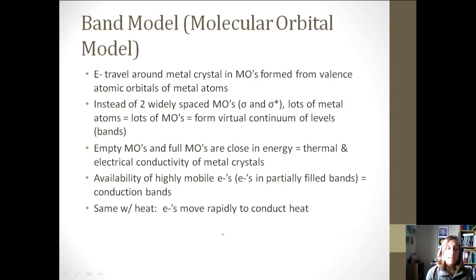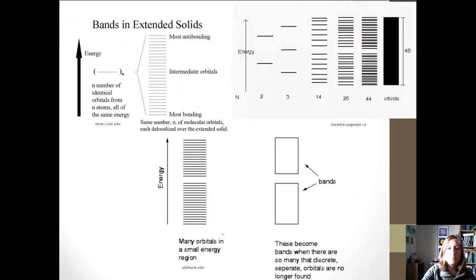So empty molecular orbitals and full molecular orbitals are very close in energy, and that's why we have this thermal and electrical conductivity of metal crystals. And so we have a lot of these highly mobile electrons. We have all these electrons in these partially filled bands, and so we get a lot of conduction. So we're taking all those levels, and because they're so close and there's so many, we're calling it a band instead. And this is the same with why they're so good at conducting heat. Here's just kind of a picture of what we're talking about. If you remember, we had our bonding and our antibonding. Well, with metals, since we have so many more electrons and so many more molecular orbitals, it just gets to be a lot, and so we just basically call it a band instead.